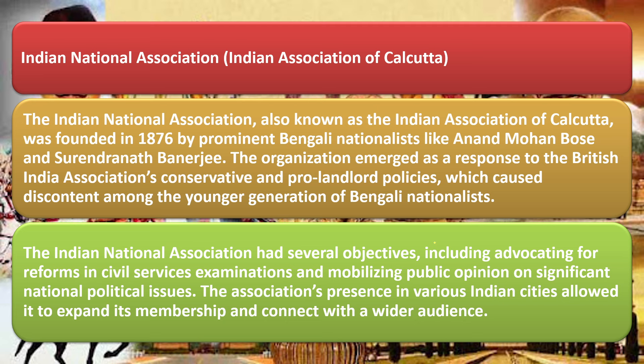Next is the Indian Association of Calcutta, also known as the Indian National Association, established in 1876. It was founded by Anand Mohan Bose and Surendranath Banerjee. It emerged in response to the British India Association's conservative and pro-landlord policies. Anand Mohan Bose and Surendranath Banerjee wanted a wider horizon of thought — promoting the whole Indian masses rather than focusing on just one class or group.